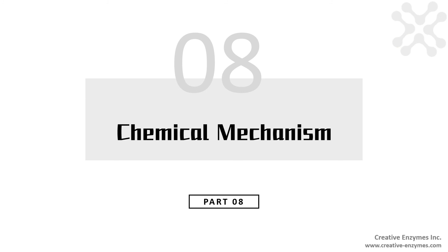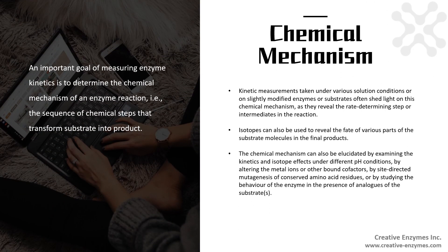Chemical Mechanism. An important goal of measuring enzyme kinetics is to determine the chemical mechanism of an enzyme reaction, for instance, the sequence of chemical steps that transform substrate into product. Kinetic measurements taken under various solution conditions, or on slightly modified enzymes or substrates often shed light on this chemical mechanism, as they reveal the rate-determining step or intermediates in the reaction.